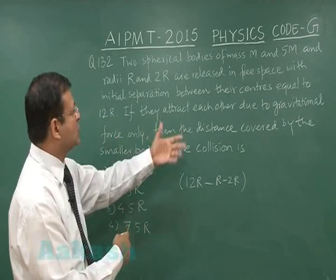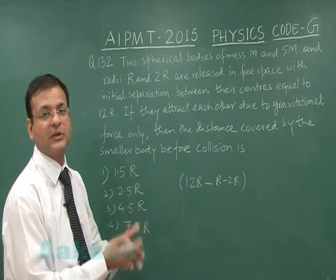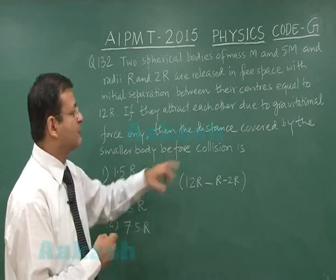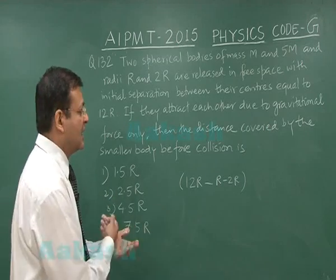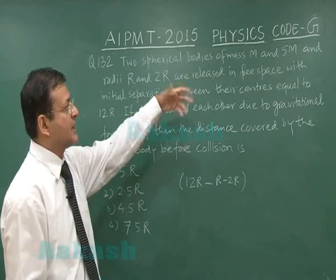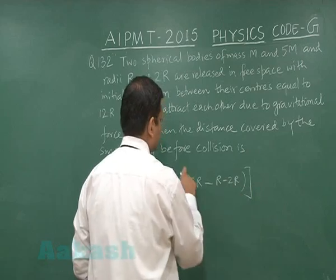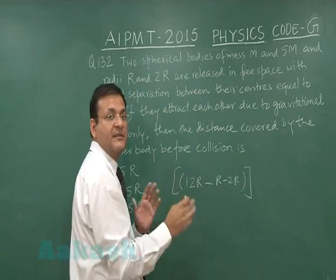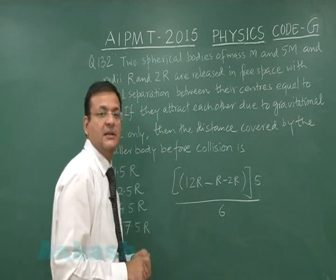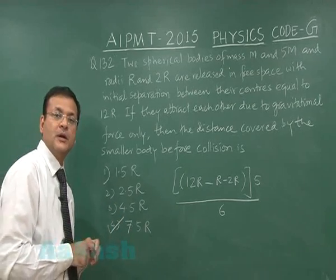They are attracting each other due to gravitational force only, which means their center of mass will remain as it is, and finally they will meet at their center of mass. For the distance covered by the smaller body before collision: the smaller mass moves in the reverse ratio of the mass, so in 5:1 ratio. Multiply the total distance by 5/6, and that gives the correct answer — option 4 for question 132.